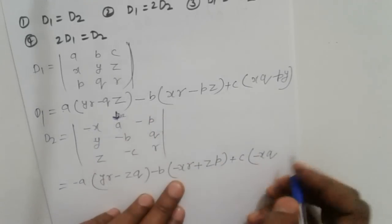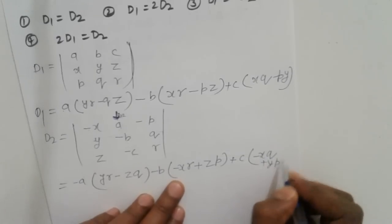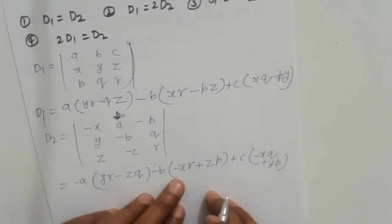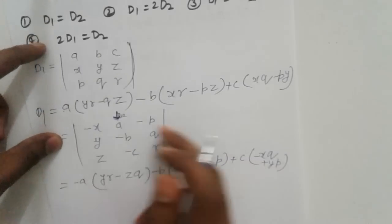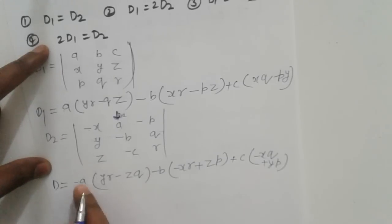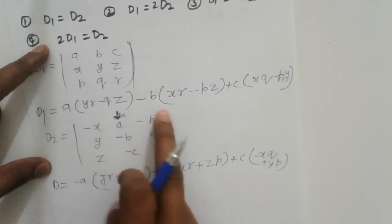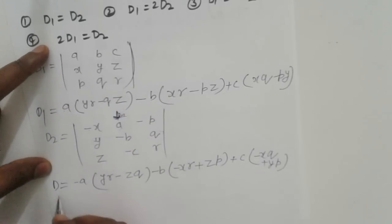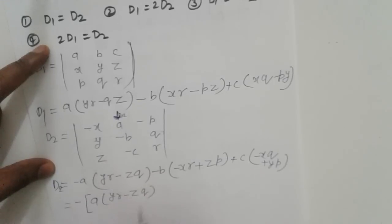That gives YP. Taking common factors in D2: taking negative common, we get A(YR - ZQ), the same YR - ZQ term appears. Taking negative common from the minus B term.